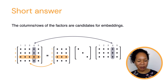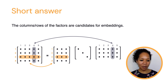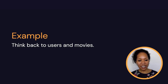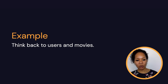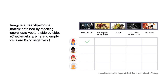Let's look at an example to make these ideas more concrete. Let's think back to users and movies. I've taken this example and the images from Google Developers' machine learning crash course on collaborative filtering — for more on this, do check out that link. Imagine we have a matrix whose rows are indexed by people and whose columns are indexed by movies, and we put a check mark in a cell if that user has watched that movie. If not, we leave the cell empty. Think of check marks as ones and empty cells as zeros or negative numbers depending on the application.